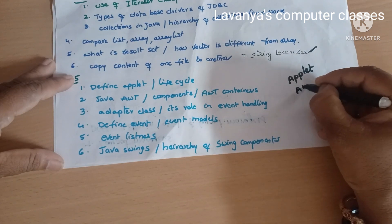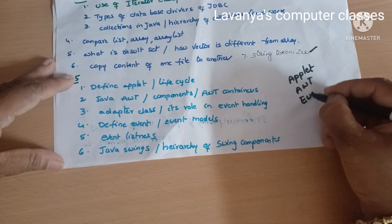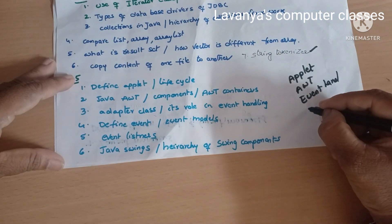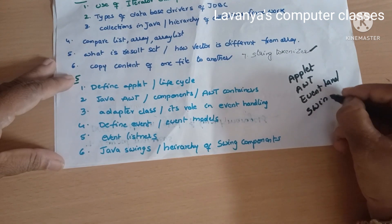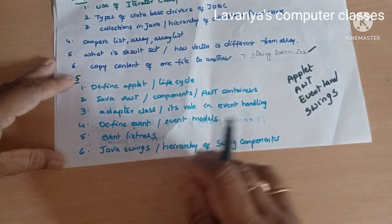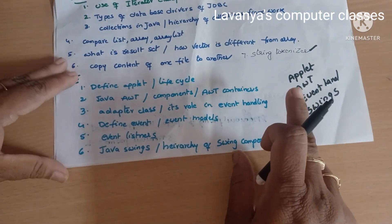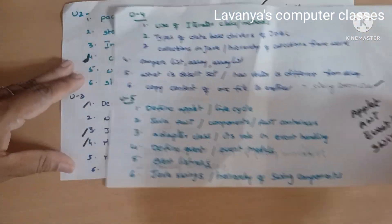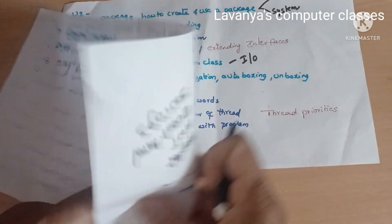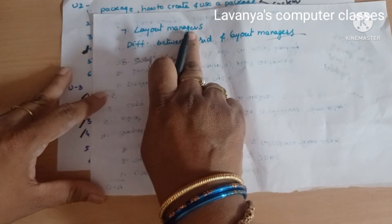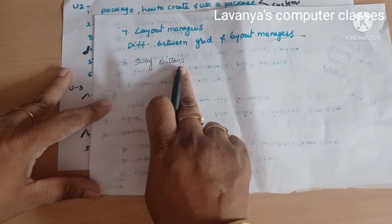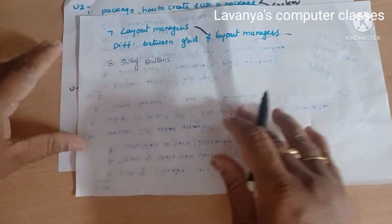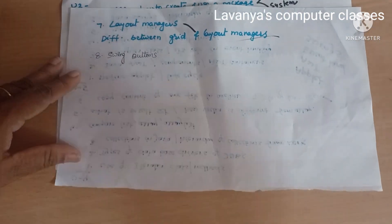Applets, AWT, event handling, and Swings are the four major concepts in Unit 5 — read all four. Two questions are likely coming from event listeners and Java Swings. Layout managers, swing buttons, and the difference between grid layout and other layout managers are also important topics.